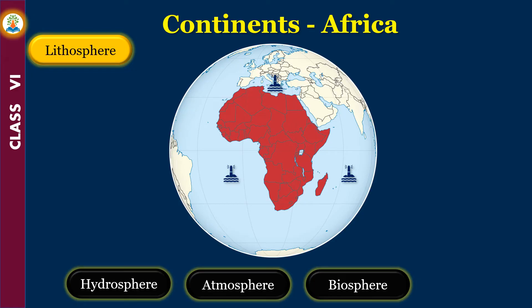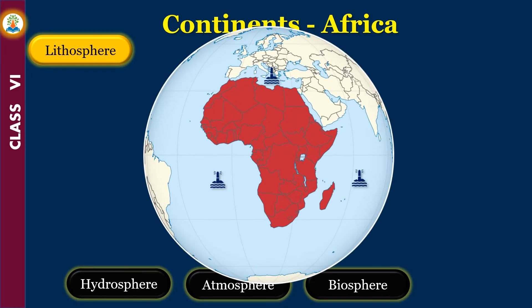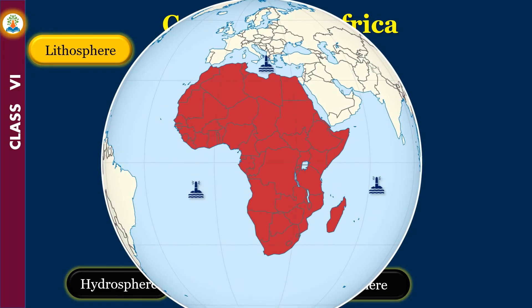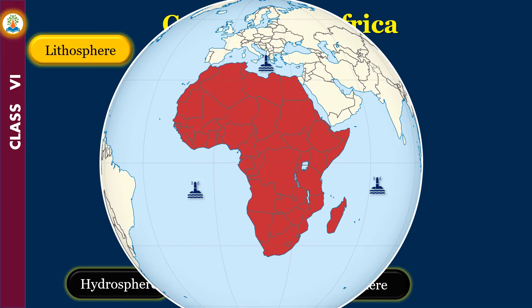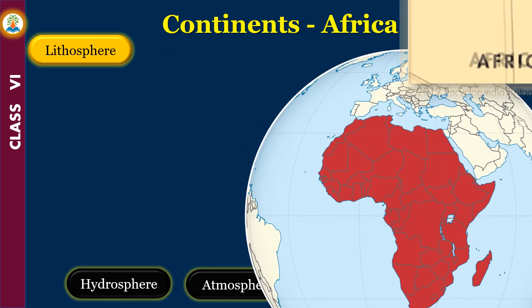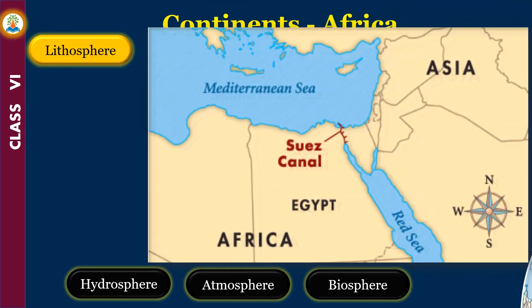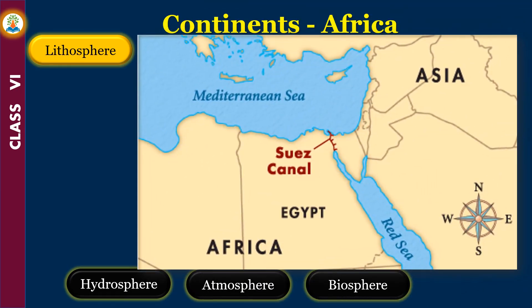Africa is bounded by three water bodies: the Mediterranean Sea in the north, the Indian Ocean in the east, and the Atlantic Ocean in the west. In the northeast corner of Africa, the Suez Canal separates Africa from Asia.